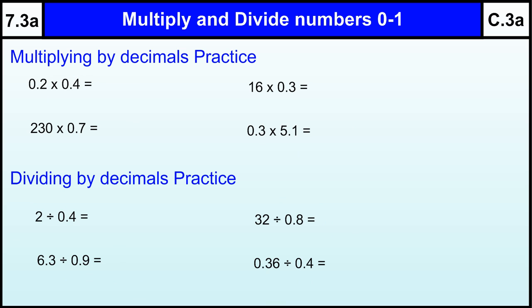And let's practice some questions. If you pause the video now. So, 0.2 times 0.4, if we do 2 times 4, that's 8, and we've got 2 decimal places in our question, so we need to add 2 decimal places in our answer including the 8.